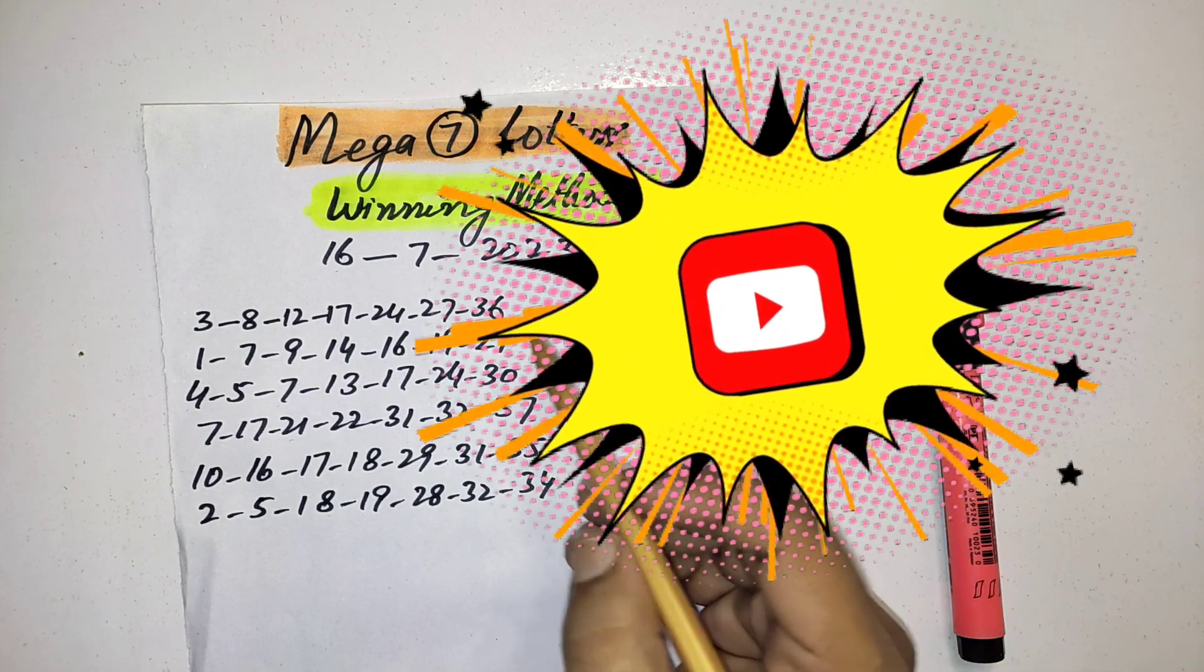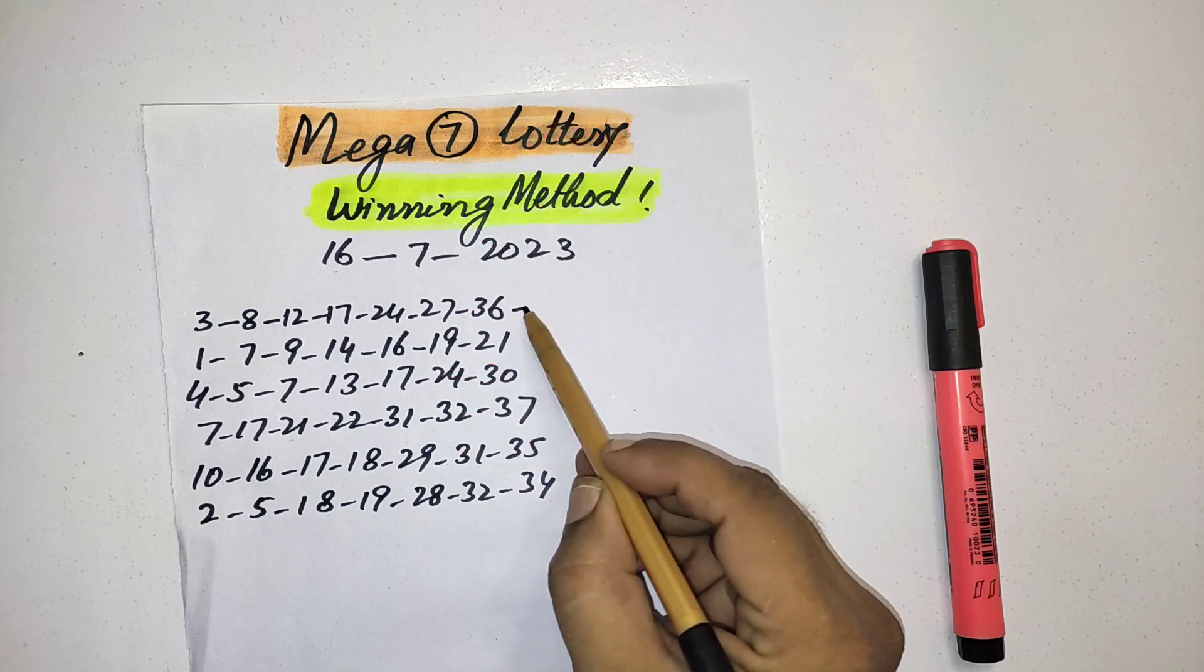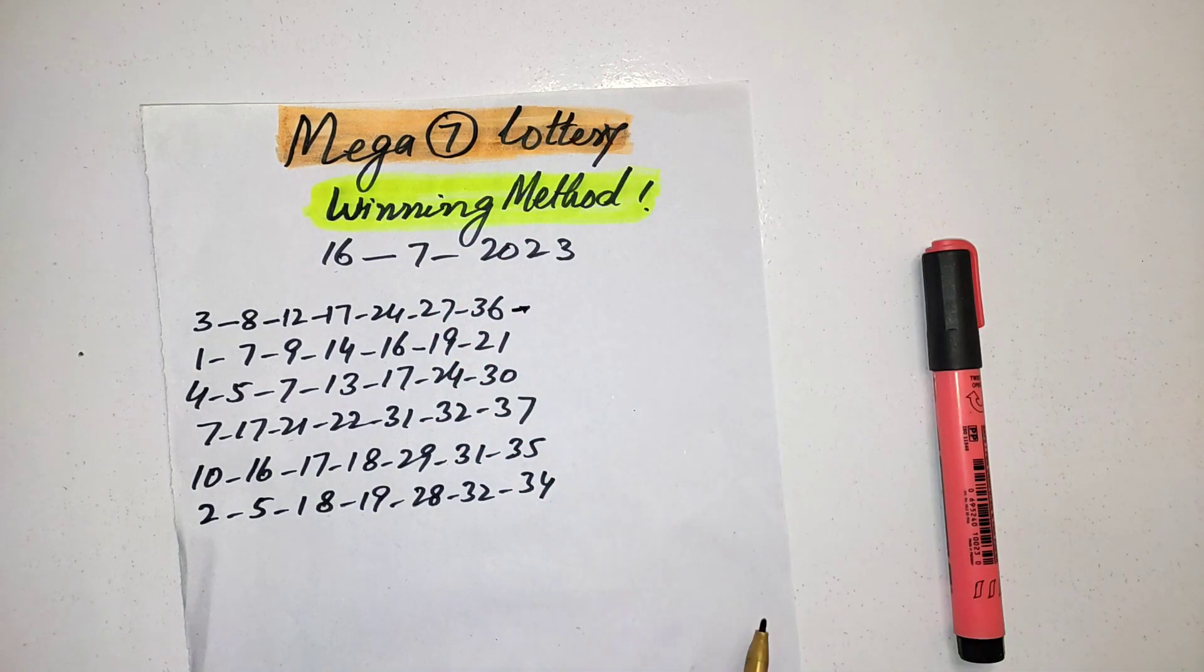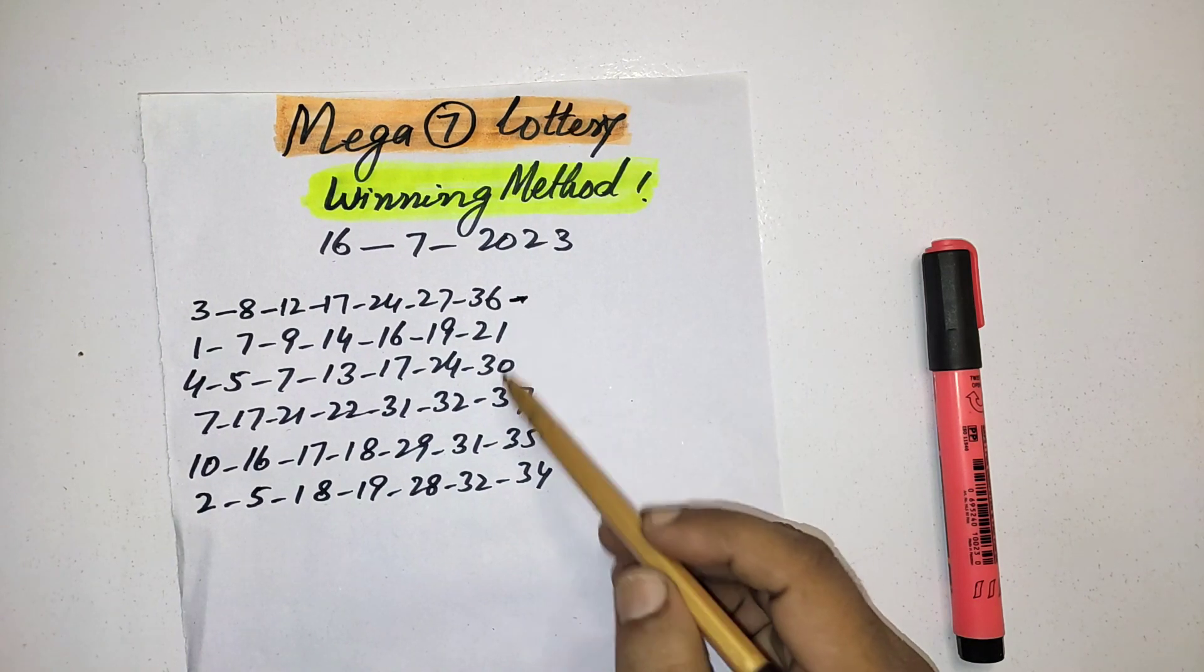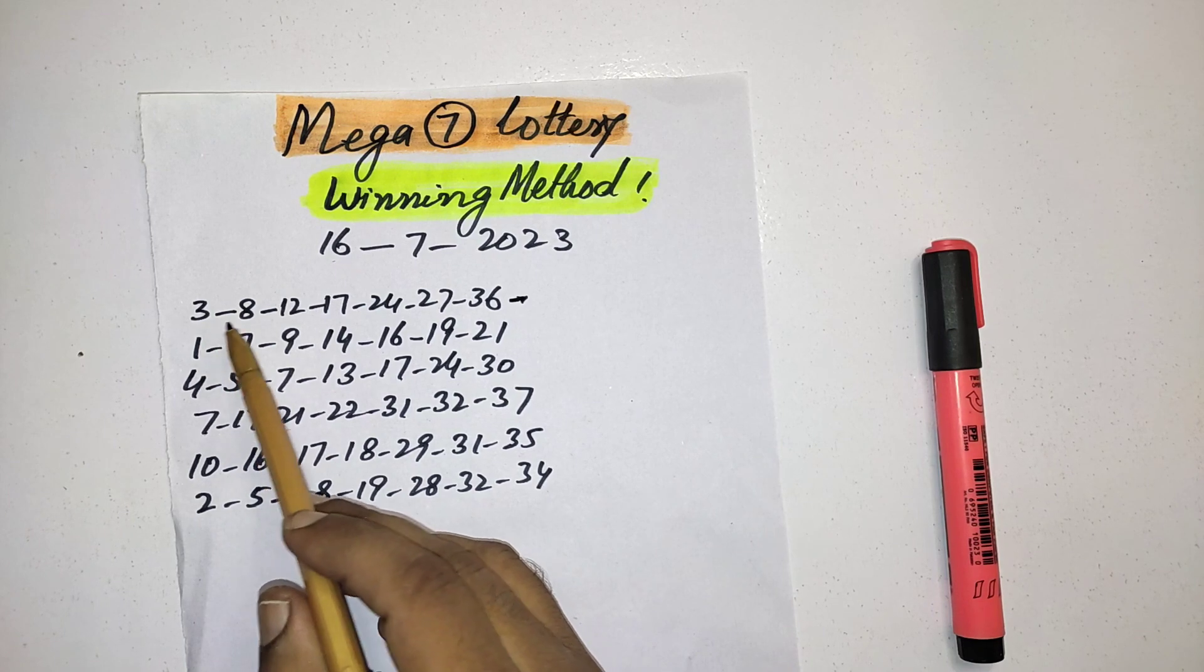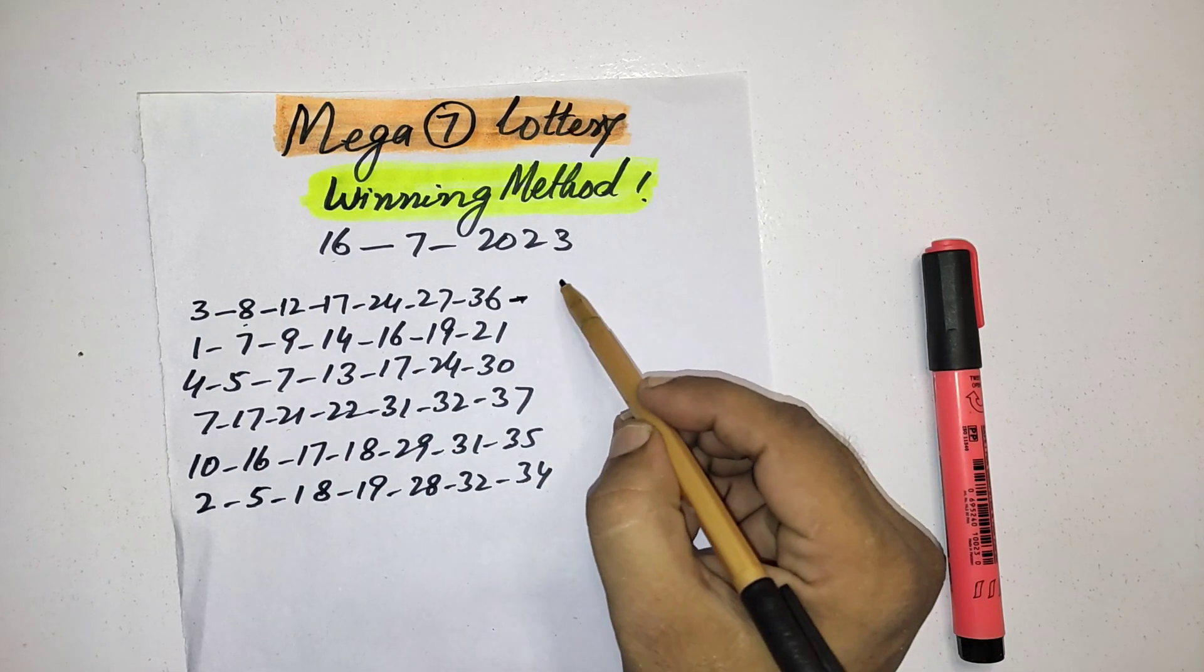First, we'll talk about odd and even numbers. The machine changes the pattern almost after four to five draws. You can see one, two, three, and four first.